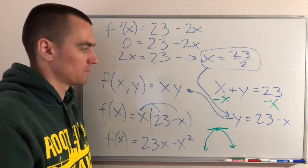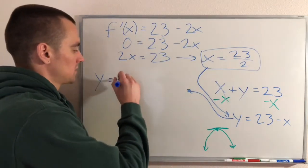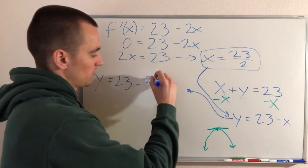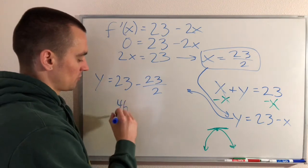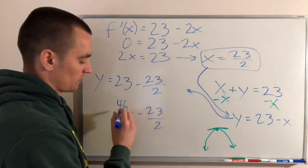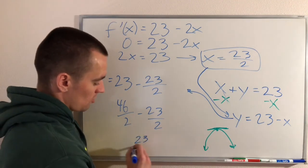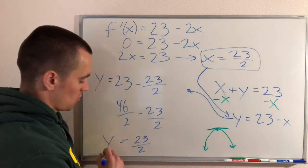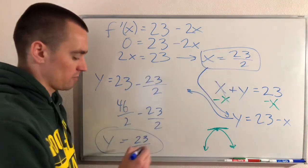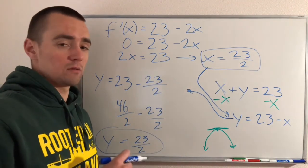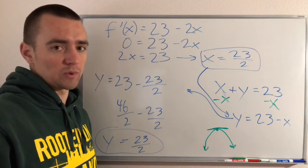So doing that will give us Y equals 23 minus 23 over 2. 23 is the same as 46 over 2, so 46 over 2 minus 23 over 2 would just be 23 over 2. So both of our numbers X and Y would both be 23 over 2, and that would be the two numbers whose sum is 23 and whose product is a maximum.